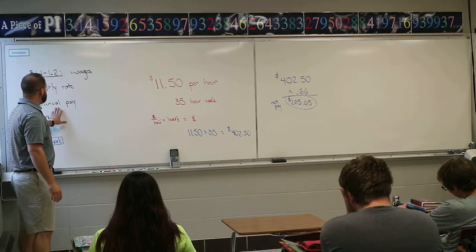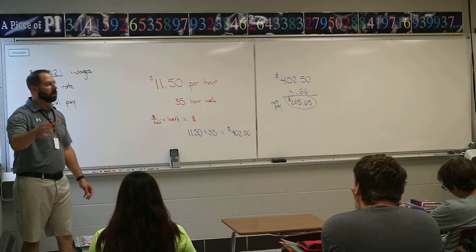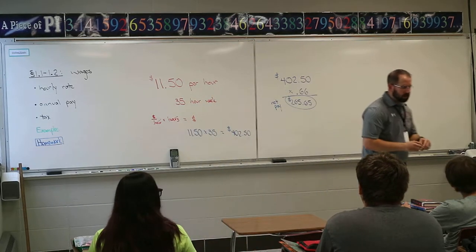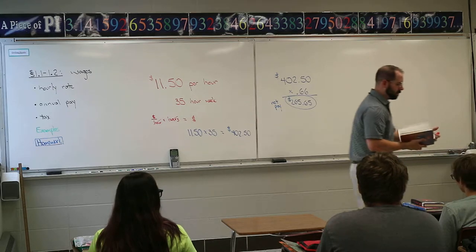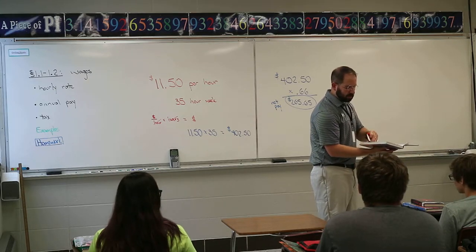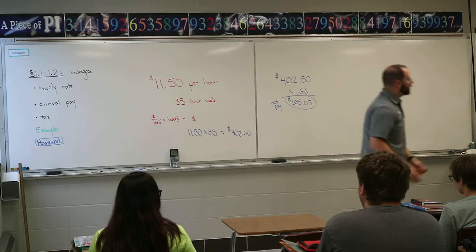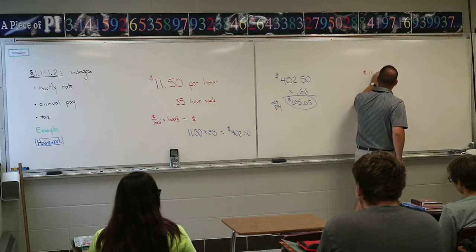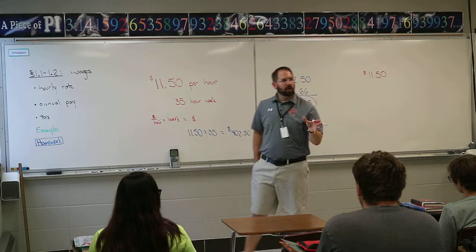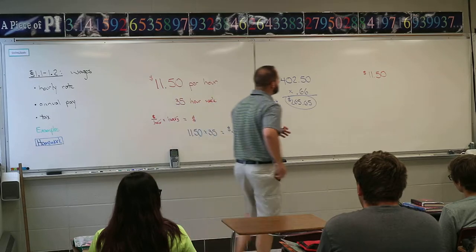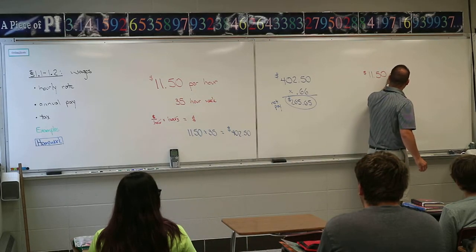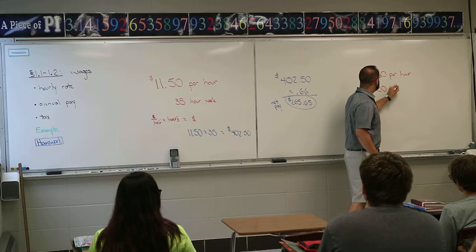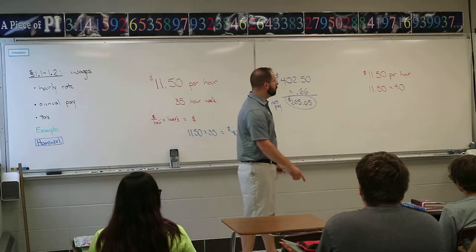The second type of homework problem goes the other direction — you're given an annual pay figure and have to figure out the hourly rate, or vice versa. For example, if QuickStar promises you $11.50 per hour and they want to know your annual pay: take $11.50 times 40 hours — a full-time work week — times 52 weeks in the year.